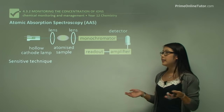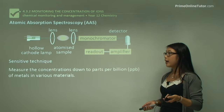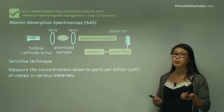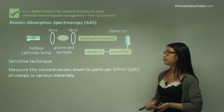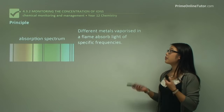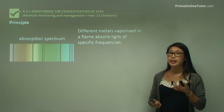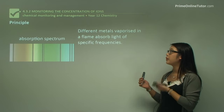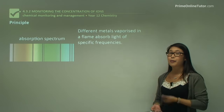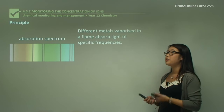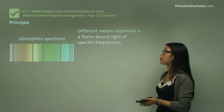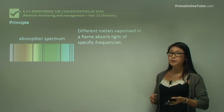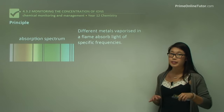This technique is really sensitive and is used to measure concentrations of ions in the sample down to parts per billion. Different metals vaporized in this machine can absorb light, and we can look at this absorbed light to determine how much of a metal is in the sample.